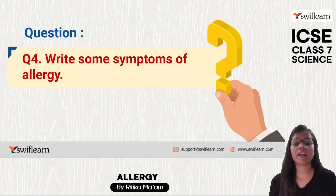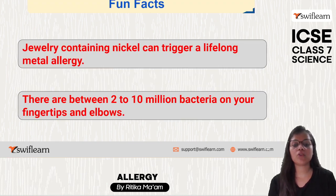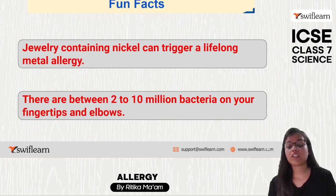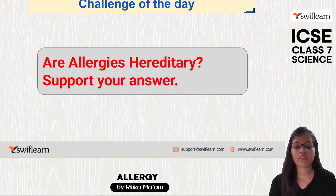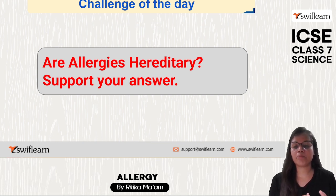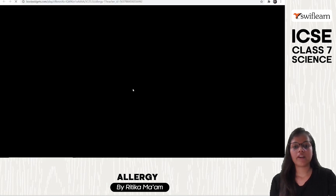Fun fact: jewelry containing nickel can trigger or increase a lifelong metal allergy. There are approximately 2 to 10 million bacteria present on our fingertips. Are allergies hereditary? Yes — many allergic problems are actually hereditary and can pass from parents to offspring through genes.